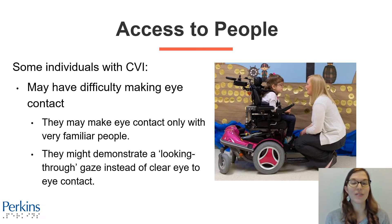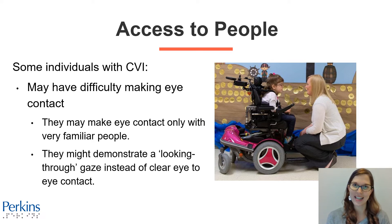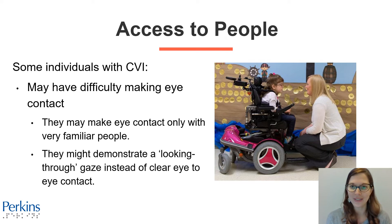Individuals with CVI can have difficulty making eye contact. They might make eye contact only with very familiar people and they might demonstrate a looking-through gaze instead of clear eye-to-eye contact. In this photograph, there's a little girl in a pink motorized wheelchair and her TVI is sitting right in front of her at eye level and their faces are pretty close. The TVI isn't talking and they seem to be looking right at each other.